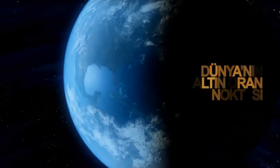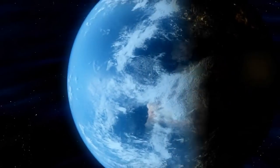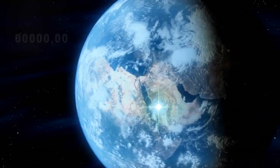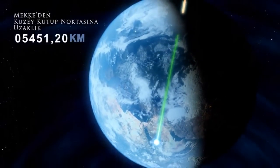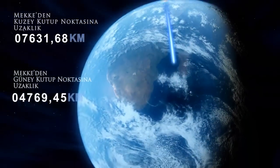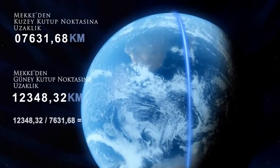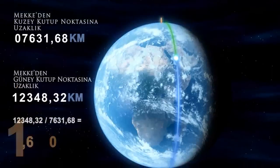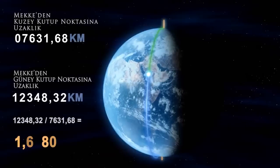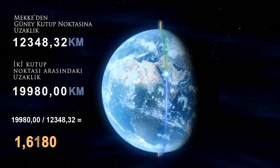So, where is the golden mean point of the Earth? The proportion of the distance between Mecca and the North Pole to the distance between Mecca and the South Pole is exactly 1.618 — the golden mean. Moreover, the proportion of the distance between the South Pole and the city of Mecca to the distance between both poles is again 1.618.